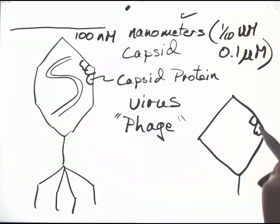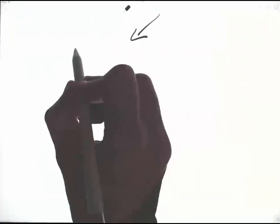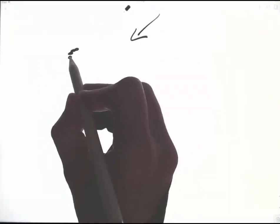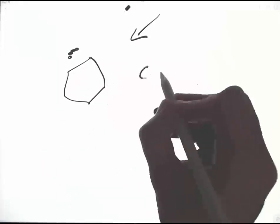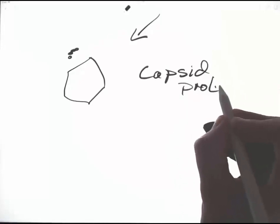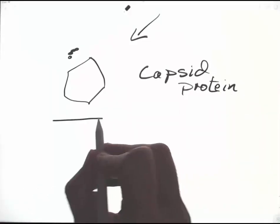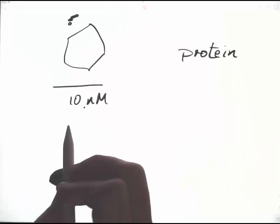The next part of our bacterial ruler will be a tenth that size: proteins. So a typical protein is a strand of amino acids, but I'm just drawing it as an irregular shape. This is a capsid protein, but it's the size of a typical protein. A typical protein is about 5 to 10 nanometers.